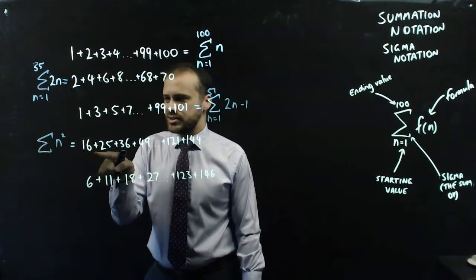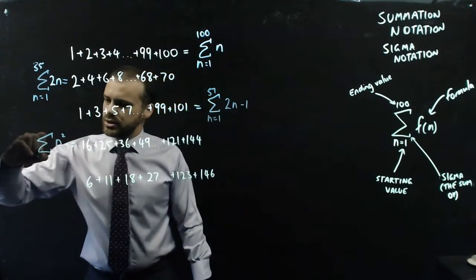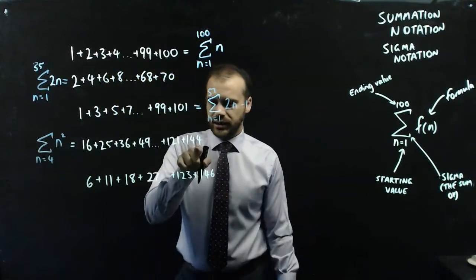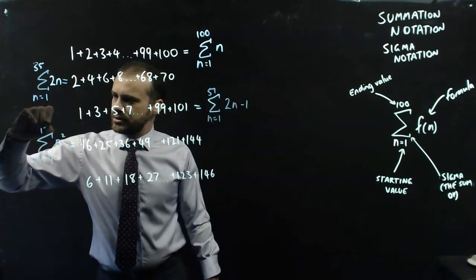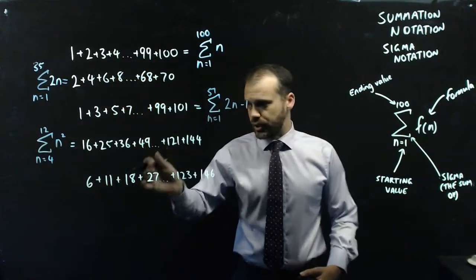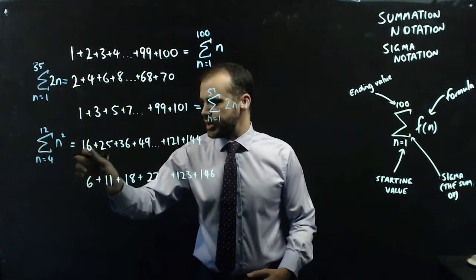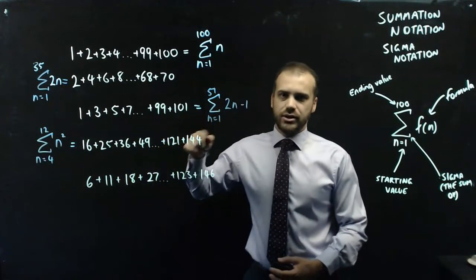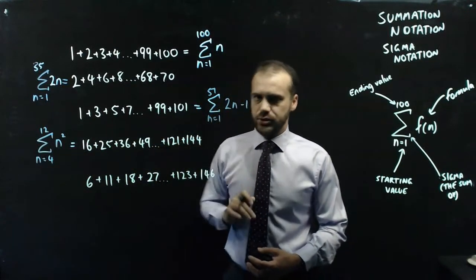The first square number is 16, which is 4 squared. So I'm going to start at n equals 4. And my last value is going to be 12. So now if I put 4 squared, I get 16. 5 squared, I get 25. 6, 7, 8, 9, 10, 11, 12, all the way up to 144.